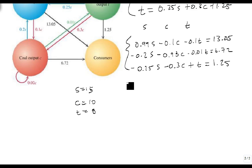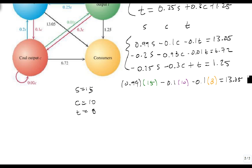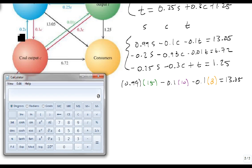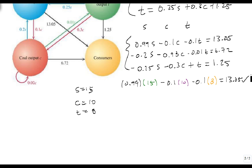We're going to get 0.99 times 15 minus 0.1 times 10 minus 0.1 times 8, and we're going to see if that equals 13.05. So we're going to get out our calculator, 0.99 times 15 minus 0.1 times 10 minus 0.1 times 8, 13.05. So this one checks out.